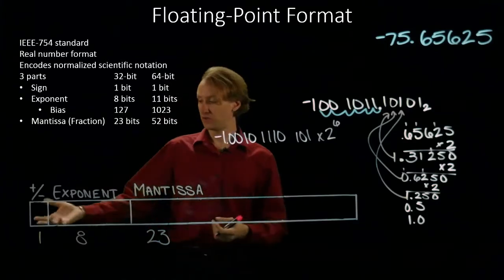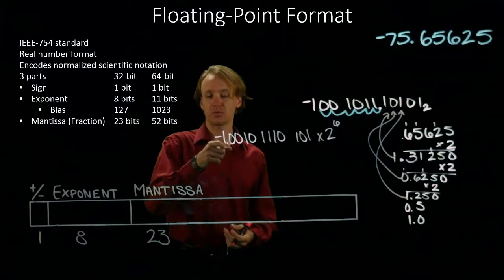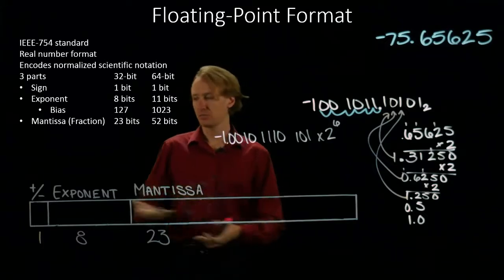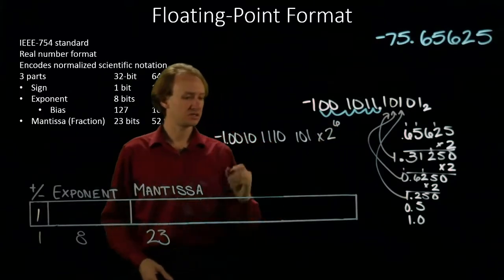Next, I just need to fill in the fields of my floating point format. I can start with my sign bit. I have a negative number, so my sign bit is 1. My exponent is 6.